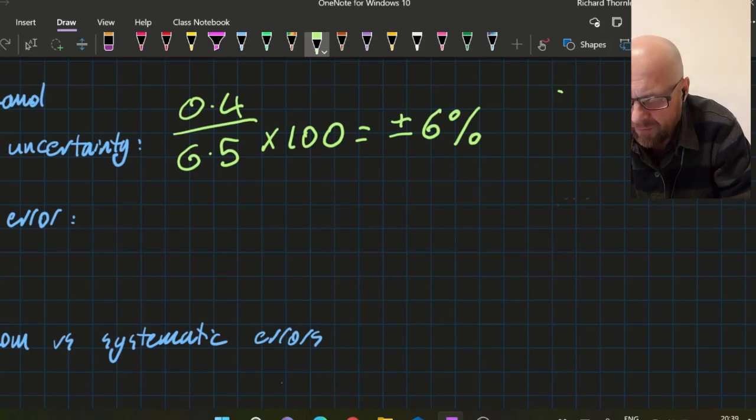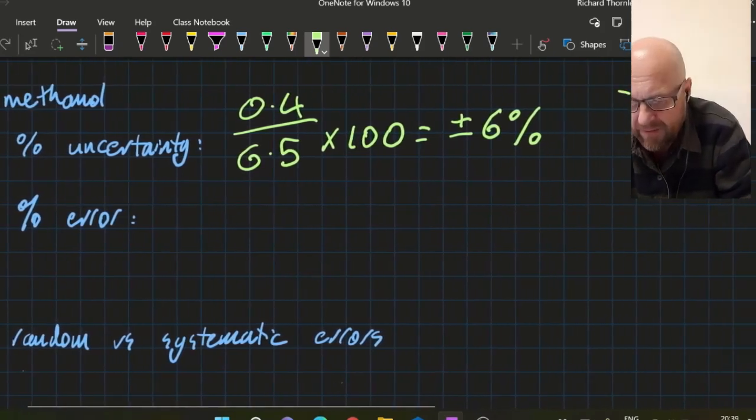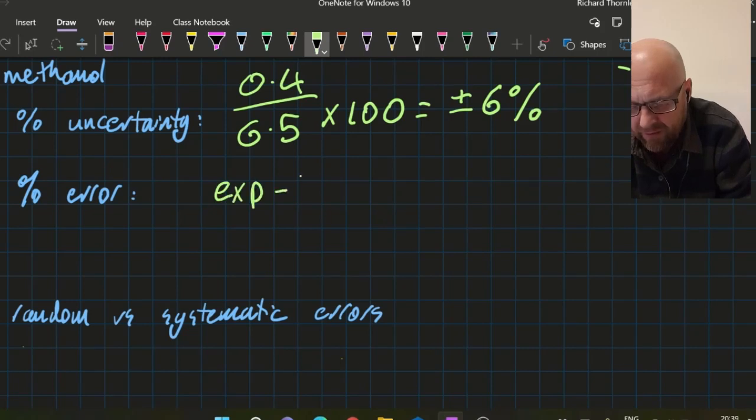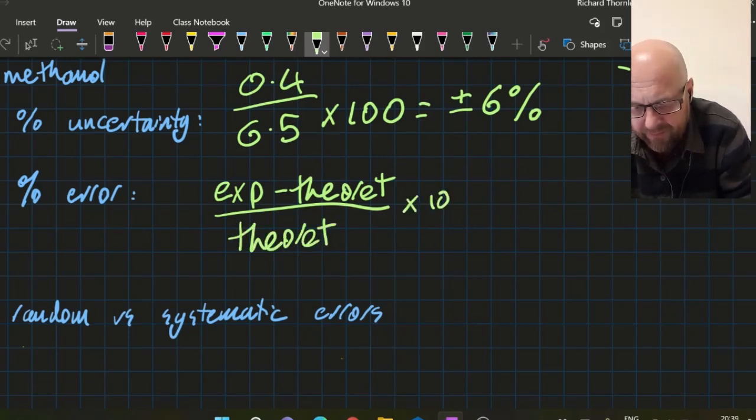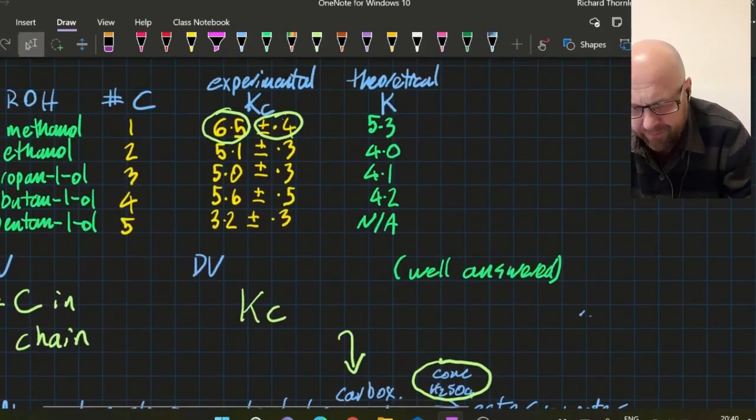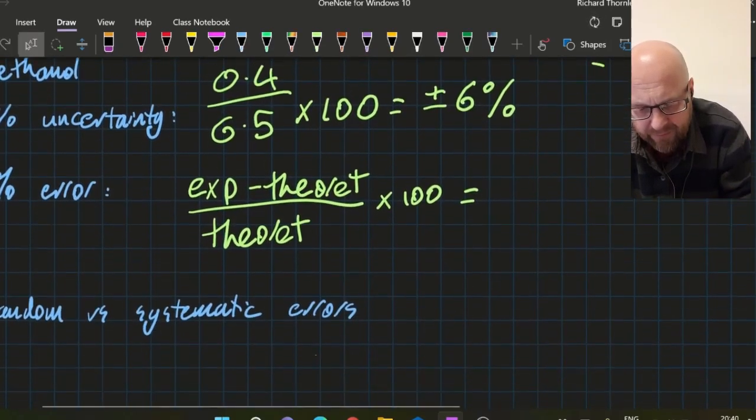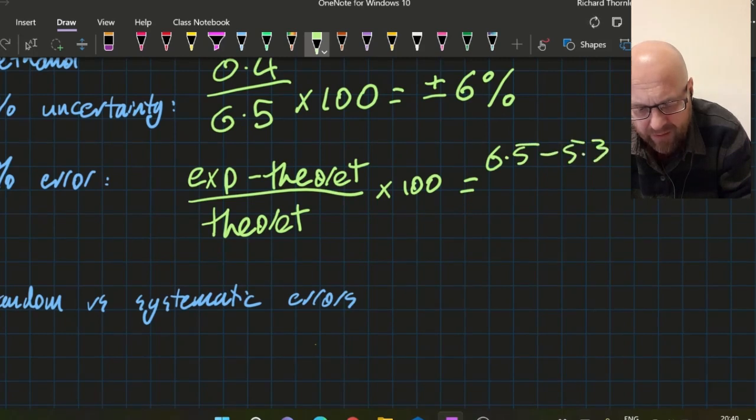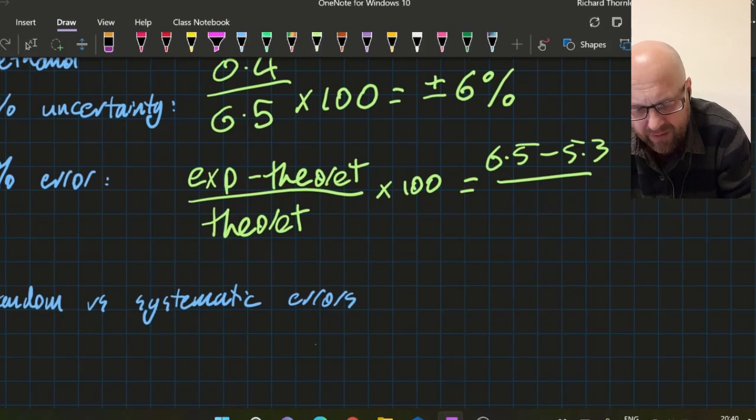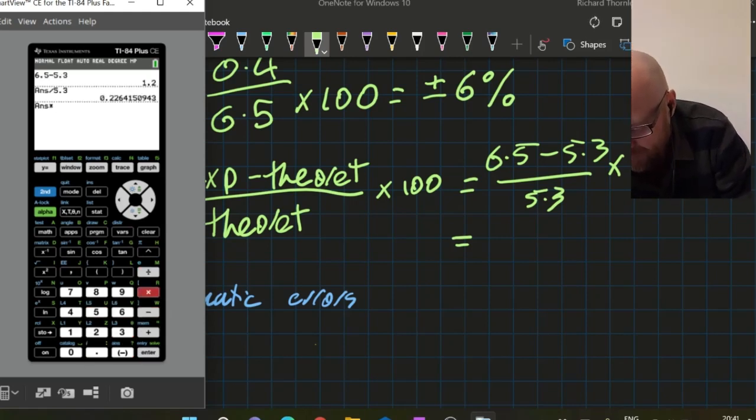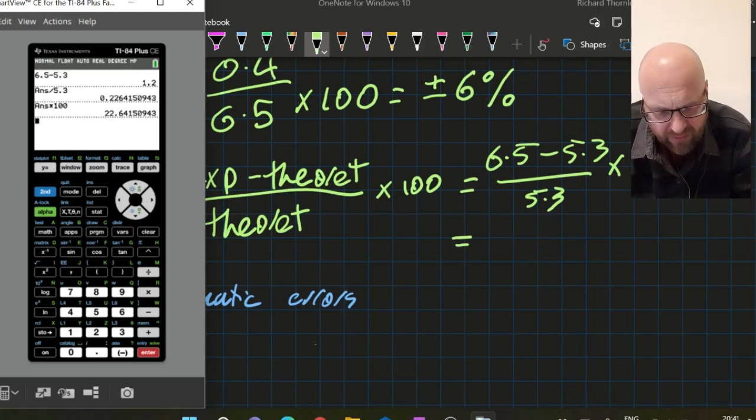For my percent error, I'm going to be doing experimental minus theoretical divided by theoretical times 100. My experimental is 6.5 and my theoretical is 5.3, so I've got 6.5 minus 5.3 over 5.3 times 100. That's 23 percent to two sig figs.